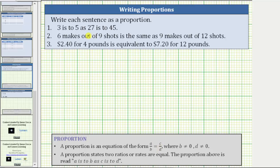For number one, we are given three is to five as 27 is to 45, which means the proportion is three over five equals 27 over 45.